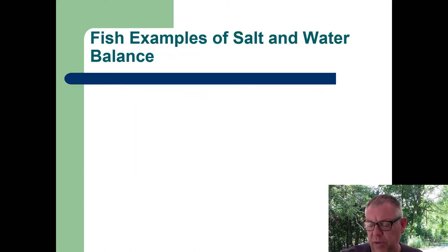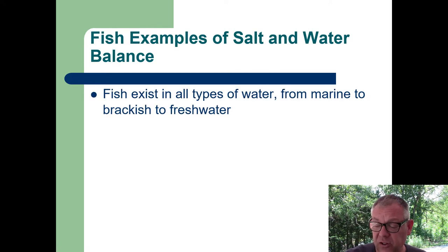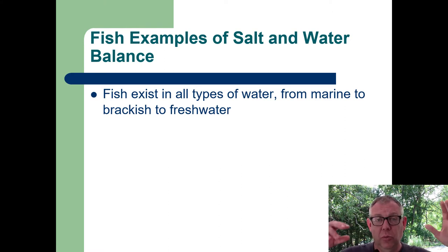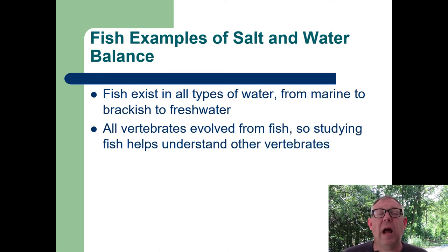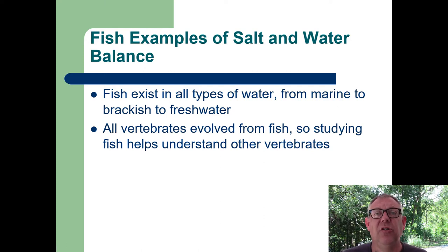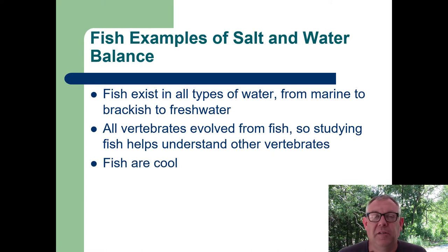Let's use fish as our model organism. Fish exist in all types of water — from the open ocean to brackish water along the coastline to fresh water — so you can see examples in all these different environments. All vertebrates evolved from fish, or we share a common ancestor with fish. By studying fish, you get insight into other vertebrates because of that common ancestry. And fish are awesome.